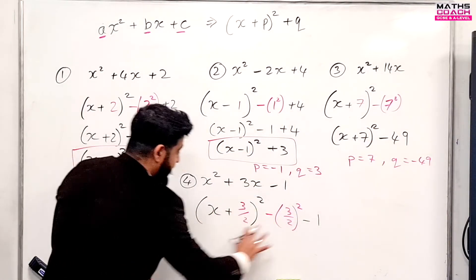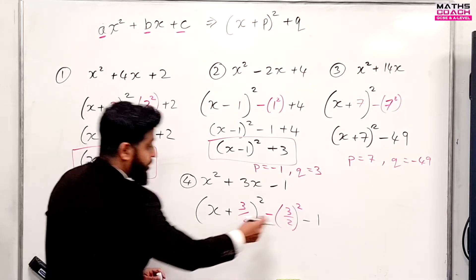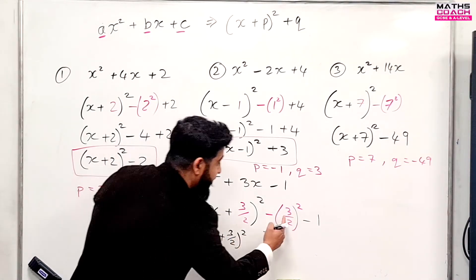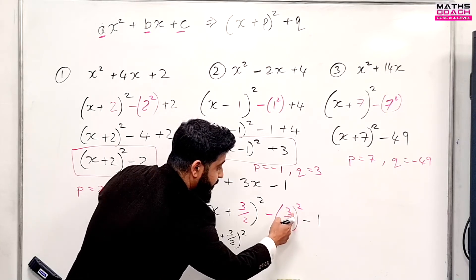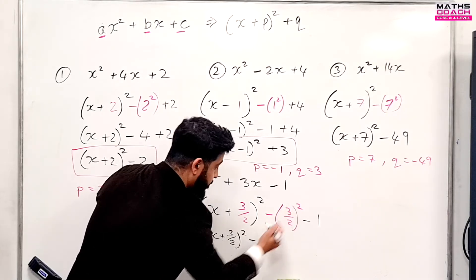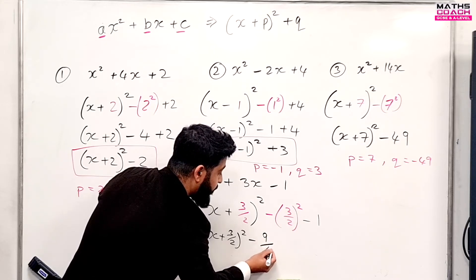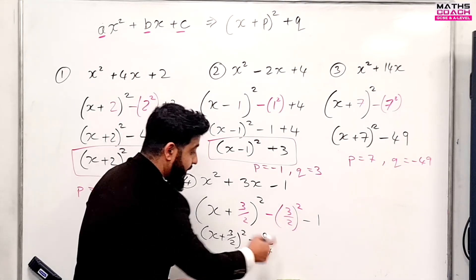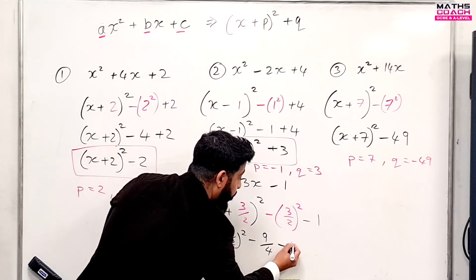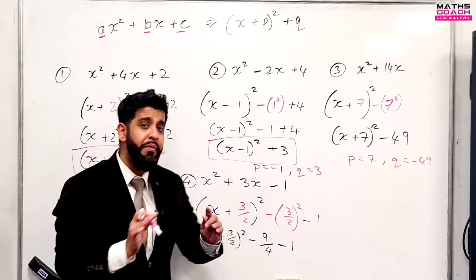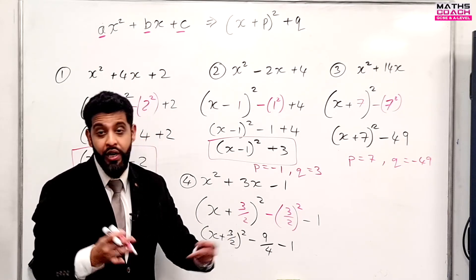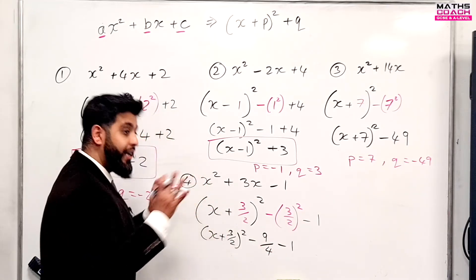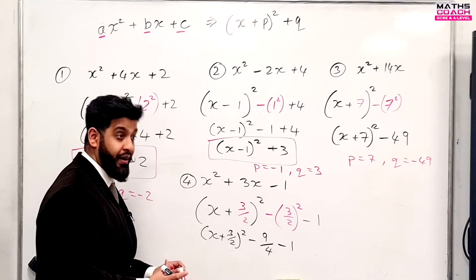Finally, the last one is a little bit trickier because you've got fractions to deal with. So we have X plus three over two, all squared. The square affects both the three and the two individually, so three squared over two squared becomes nine over four. Then we take away one. Remember, this may appear on a non-calculator paper, so we need to handle it without a calculator. If it does appear on a calculator paper, you can just get one whole answer.